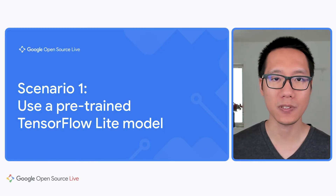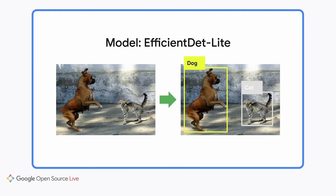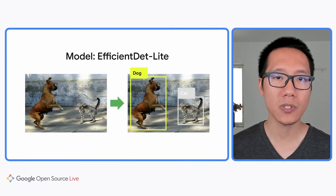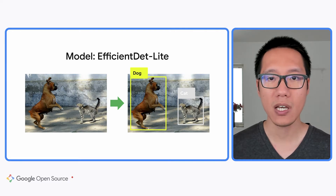Pre-trained models are machine learning models that are already trained to do a specific task. For example, there's a pre-trained object detection model called EfficientDet Lite. This model can recognize 70 types of different objects like dog, cat, keyboard, television, and many more. The model takes an image as input and returns a list of objects it recognizes together with their locations in the image — for example, detecting a dog and a cat and where they are.